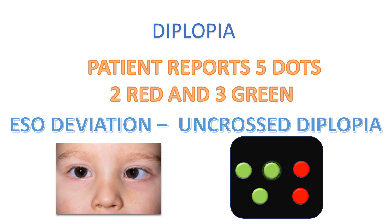The other possibility is diplopia, where the patient reports five dots — two red and three green. This diplopia can be presented in different ways. The first is esodeviation, where the patient will experience uncrossed diplopia. They usually say they see five lights, two red and three green, and the lights are horizontally displaced side by side — the red color lights from the right eye are seen on the right side and the green lights from the left eye are seen on the left side. This is recorded as five lights, uncrossed diplopia.